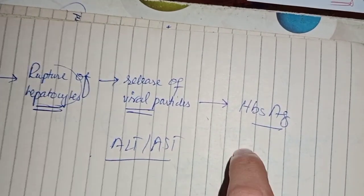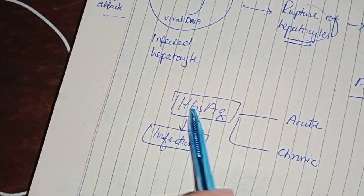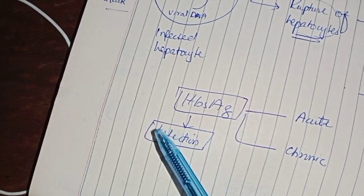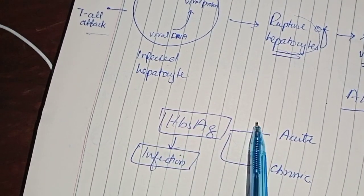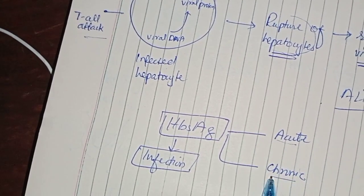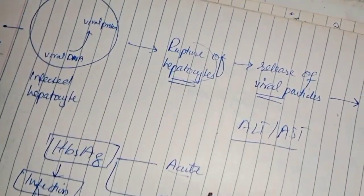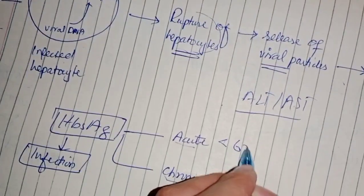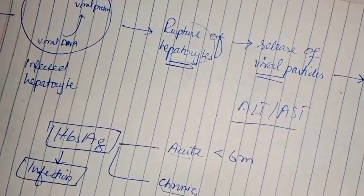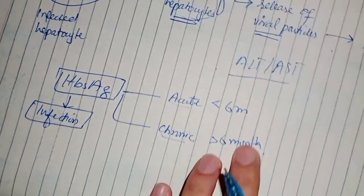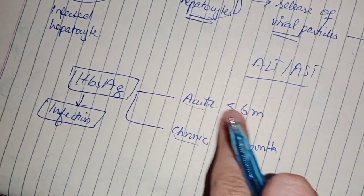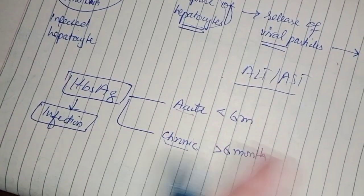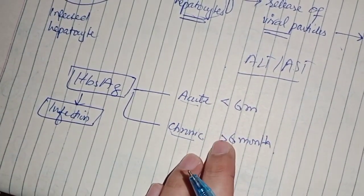When hepatitis B surface antigen rises, at that time there is no hepatitis B surface antigen antibody yet. Hepatitis B surface antigen is the most important of the viral serology markers. When hepatitis B surface antigen is present in your blood, it means you have the infection. To differentiate whether it is acute or chronic: if it is present for less than 6 months, it means acute infection; if present for more than 6 months, it means chronic infection. The presence of hepatitis B surface antigen means the presence of infection.